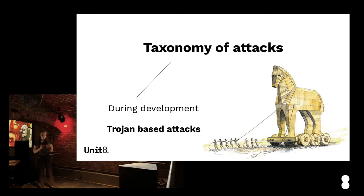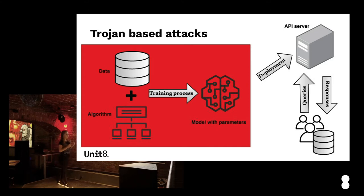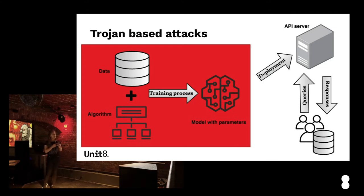The Trojan idea is the same as for normal software: to discover a way to modify a model's behavior in certain circumstances such that the behavior in other situations stays the same. Having access to the development flow, an attacker may craft a couple of attack types, requiring various extents of knowledge. The attack might be done with a white-box approach when the attacker knows everything about the training data, the algorithm, and the learned parameters. Or it may be done with a black-box approach when the attacker knows hardly anything about the development phase. What those attacks have in common is that the attacker must be able to modify the model — either retrain it or replace it.